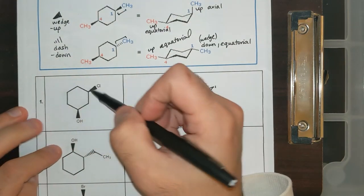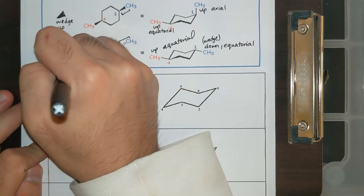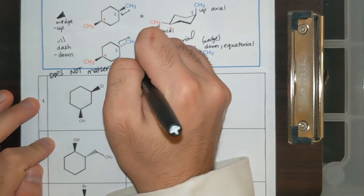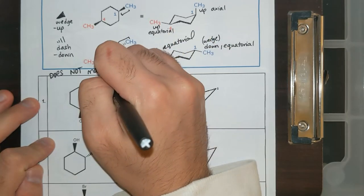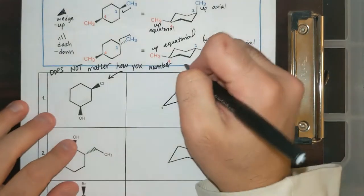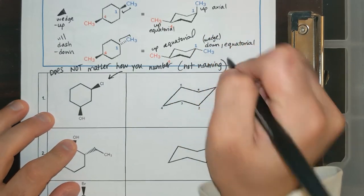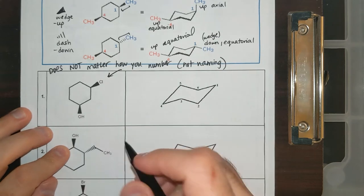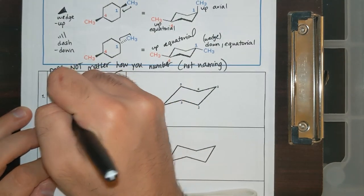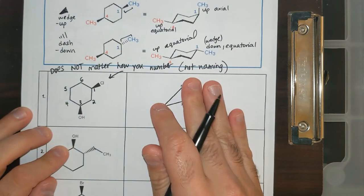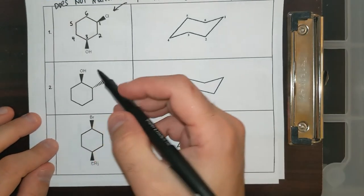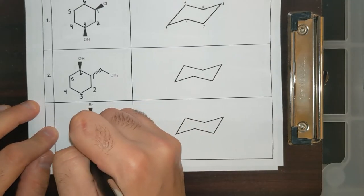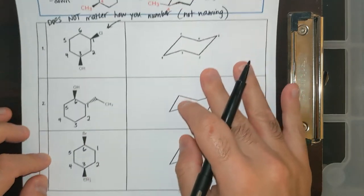It does not matter how you number this structure. I'm going to say this again — it does not matter how you number here. We're not naming it, we're drawing it. When we draw, we get to decide where things go. So as long as you are consistent — if this is carbon one, I'm going to say one, two, three, four, five, six — it doesn't matter. It matters how you put things up and down on the ring.